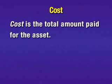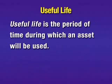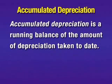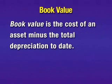Cost is the total amount paid for the asset. Useful life is the period of time during which an asset will be used. Salvage value is the estimated value of an asset when it is retired from service, traded in, disposed of, or exhausted. Accumulated depreciation is a running balance of the amount of depreciation taken to date, and book value is the cost of an asset minus the total depreciation to date.